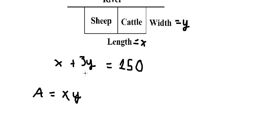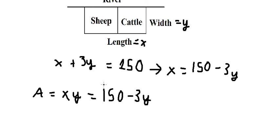So I will move 3y to the right, and now we need to substitute x into the area formula. So x equals 150 minus 3y, and area equals y multiplied by this expression.